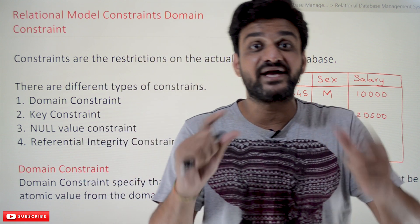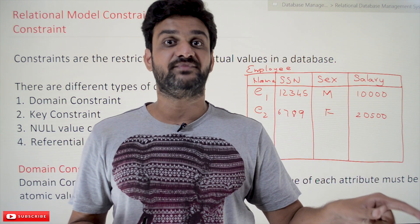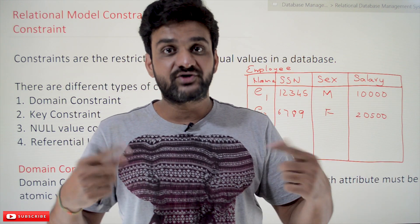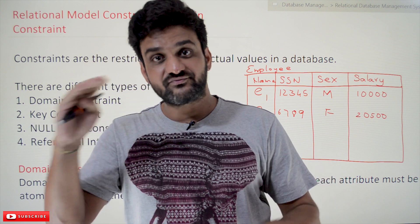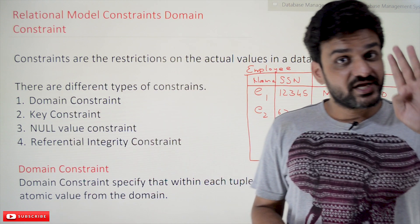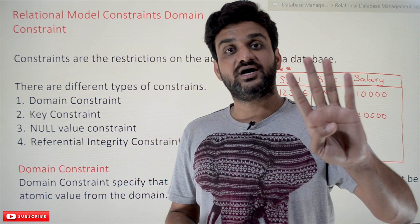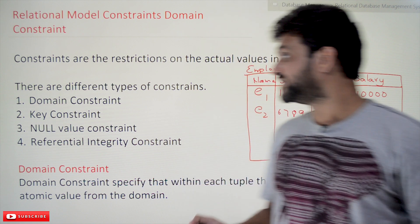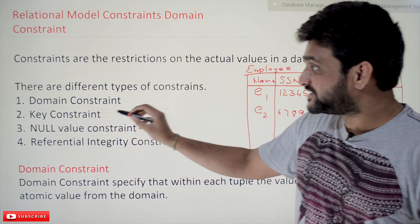Why do we need to impose constraints on the database? It is for the better management of the data in the database. There are four different types of constraints: domain constraint, key constraint, null value constraint, and referential integrity constraint.